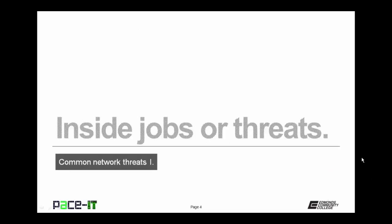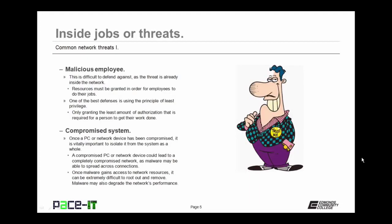I'm going to begin by talking about inside jobs or threats. First up is malicious employees. We may not know the reason why they're malicious, but they are difficult to defend against, as they are already inside the defenses of the network. And because they're employees, resources have been granted to them in order for them to do their job. One of the best defenses against malicious employees is using the principle of least privilege — only granting the least amount of authorization required for a person to get their work done.